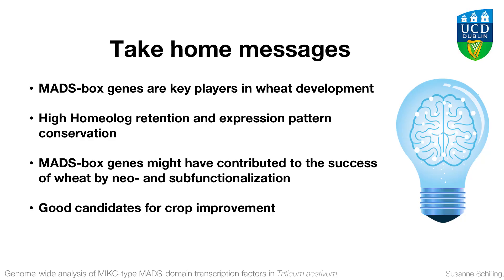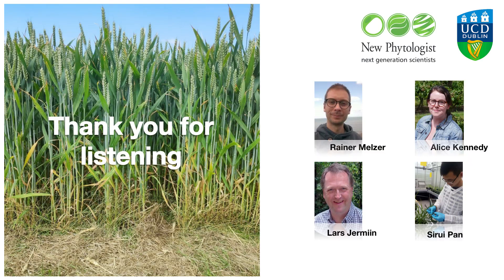I hope I could convince you today of the following points. MADS-box genes are really important key players for not only wheat but general plant development. They have very high homeolog retention in wheat and a very conserved expression pattern. But on the other hand, they might have contributed to the success of wheat by neo- and sub-functionalization. And they would actually make really good candidates for further crop improvement. With that, I want to thank all the people involved in the project, I want to thank the organizing committee for giving me the opportunity to give this talk today, and I want to thank you for listening. I'm happy to take your questions.